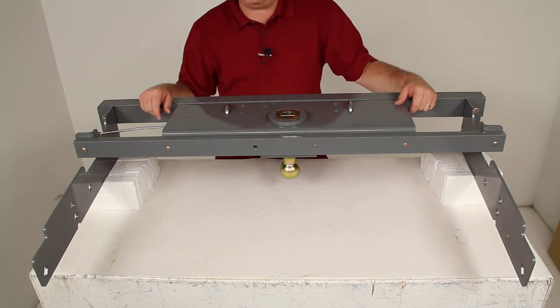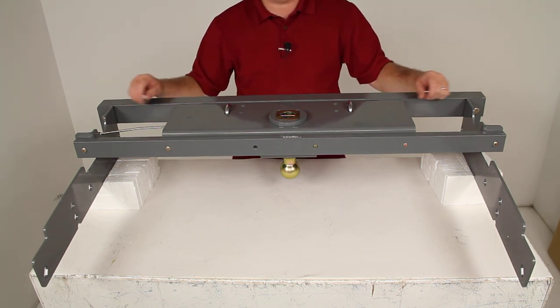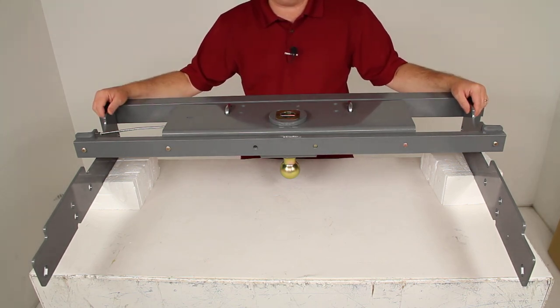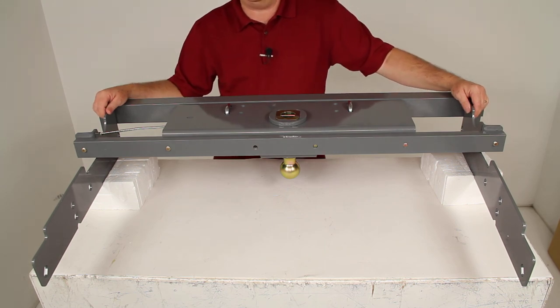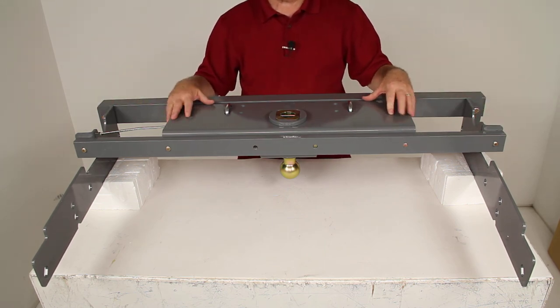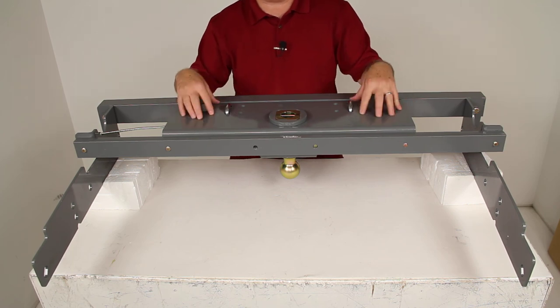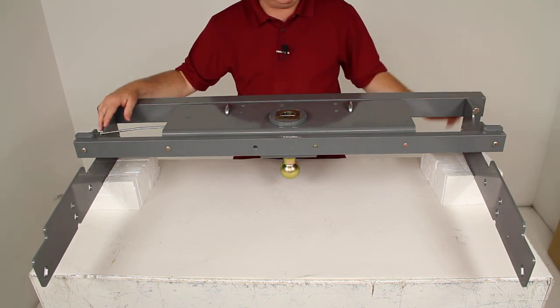Simple as that. And that should do it for the review on part number BWGNRK1050. This is the B&W Turnover Ball Underbed Gooseneck Trailer Hitch with the custom installation kit.